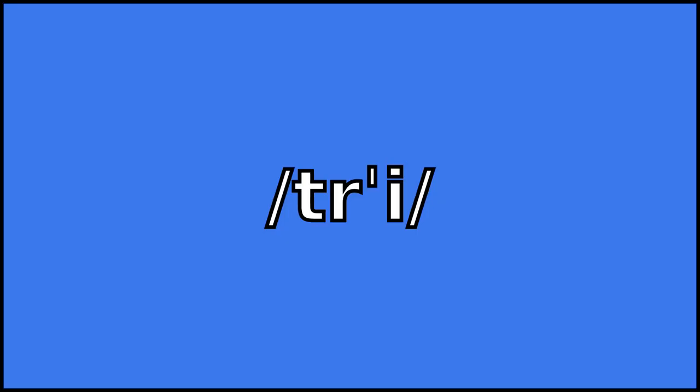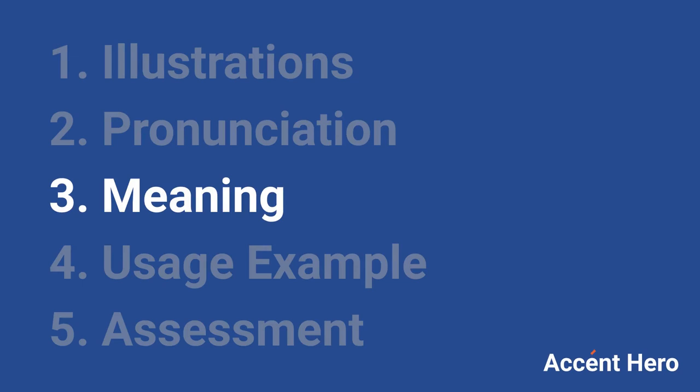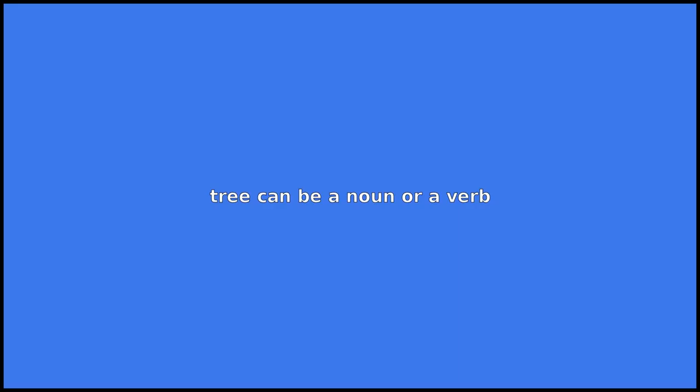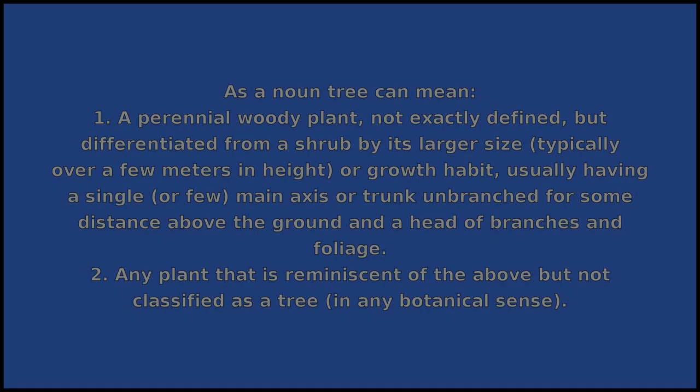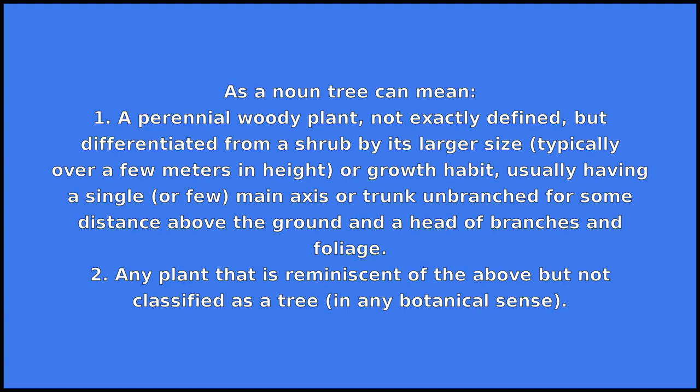Tree can be a noun or a verb. As a noun, tree can mean: 1. A perennial woody plant, not exactly defined, but differentiated from a shrub by its larger size, typically over a few meters in height, or growth habit, usually having a single or few main axis or trunk unbranched for some distance